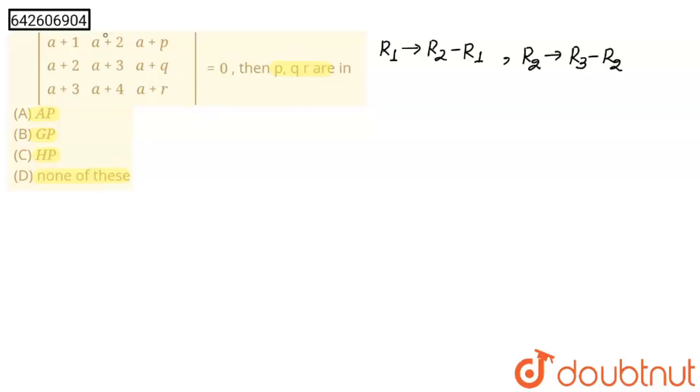So this is our R1. When I do R2 minus R1, so a+2 minus a+1, this will become 1. a+3 minus a+2, this will also become 1. And a+q minus a+p, this will become q minus p.